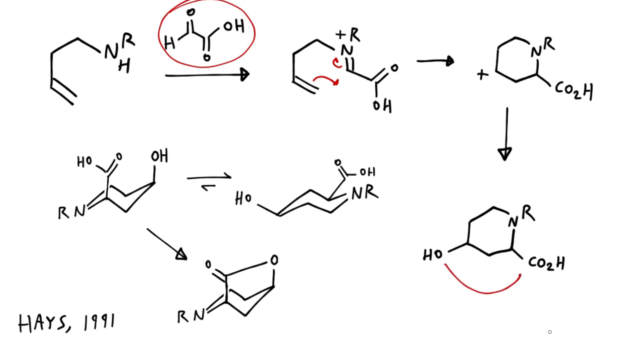But now we have two substituents on the piperidine ring, and the stereochemical disposition obviously matters, because these could turn out to be cis or trans.